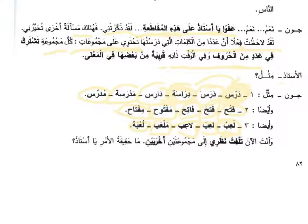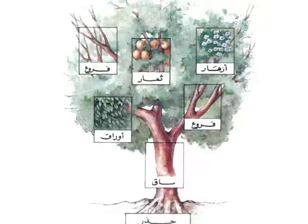وأنت الآن تلفت نظري إلى مجموعتين أخريين — and now you direct my attention to two other groups. ما حقيقة الأمر يا أستاذ? Al-Ustad says: حقيقة الأمر يا جان أن الكلمات في كل مجموعة تشترك في عدد من الحروف تسمى في اللغة العربية الجذر أو الأصل — the words in each group share letters called the root, الجذر أو الأصل.